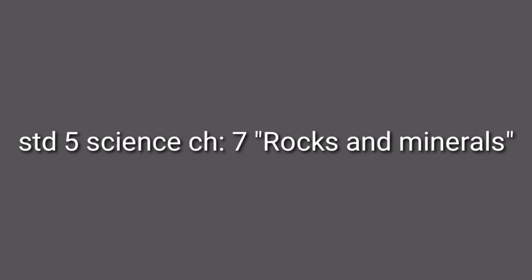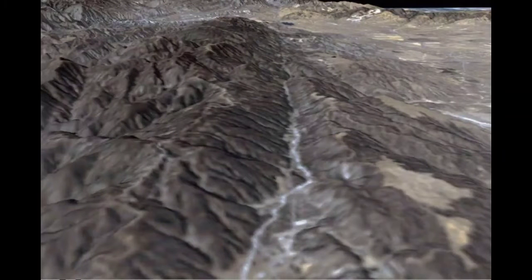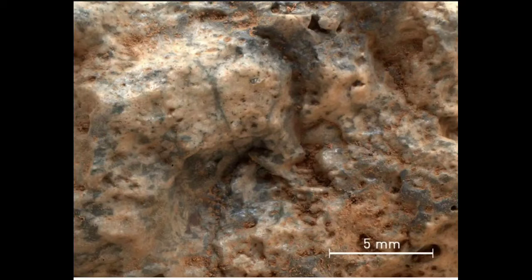Good morning. Let's begin chapter 7: Rocks and Minerals. All of us know that our earth is made mostly of rocks. What is a rock? A rock is a solid collection of minerals. Different rocks are made up of different minerals. Based on how they are formed, rocks are divided into three types.